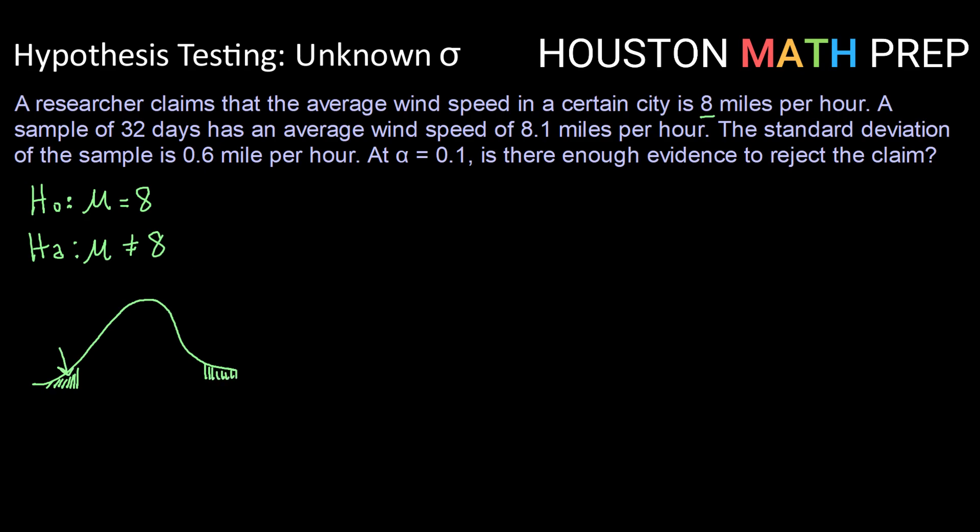Alright, so that means that the area in each tail will be our significance level over 2, or 0.1 over 2, which is 0.05. So we've got 0.05 in each tail.